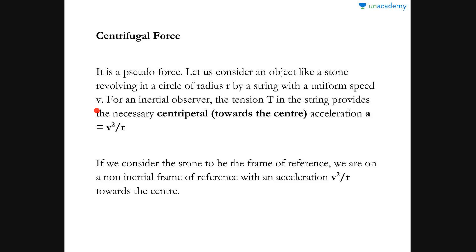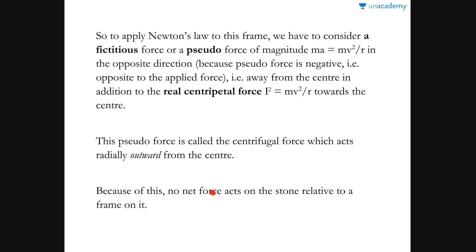For an inertial observer, the tension T in the string provides the necessary centripetal force towards the center. This centripetal acceleration is v squared divided by r, as you know from circular motion dynamics. Now if we consider the stone to be the frame of reference — that is, the observer is on the stone — we are on a non-inertial frame of reference, because the stone has a centripetal acceleration v²/r towards the center. A frame of reference with acceleration is always non-inertial.